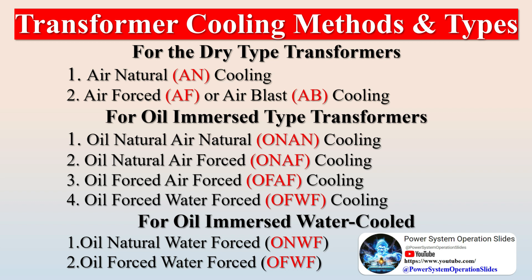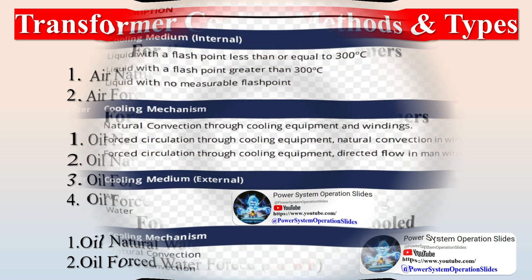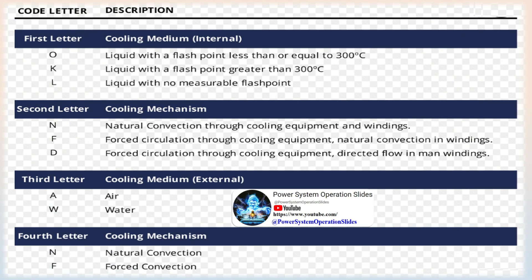Dry type transformers are cooled by air circulating over the outside housing. These transformers are usually rated no higher than 500 kilowatts. Dry type transformers are commonly wall mounted and used for lighting. Unlike oil immersed transformers, they may be used indoors without a fireproof vault. Dry type transformers have two further subtypes: Air Natural and Air Blast (Air Forced).